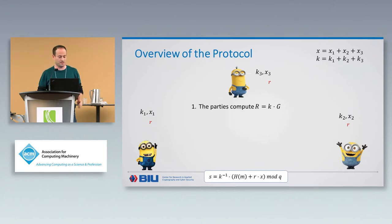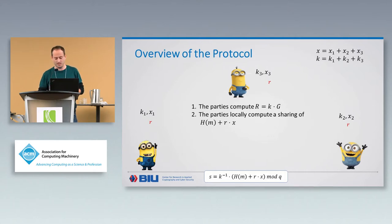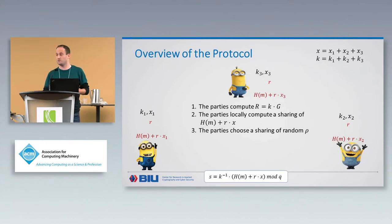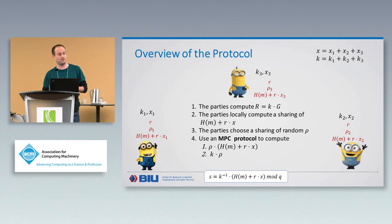The protocol proceeds with each party locally computing a sharing of R times X plus the hash of the message. Since R and the hash of the message are now public, these are only linear operations over additive shares — each party can multiply its share by R and add the hash of the message. Then each party chooses a random sharing of some random Ro, and the parties run an MPC protocol twice: once to compute Ro times (R·X + H(M)), and once to compute K times Ro — both values being shared among the parties with outputs revealed.